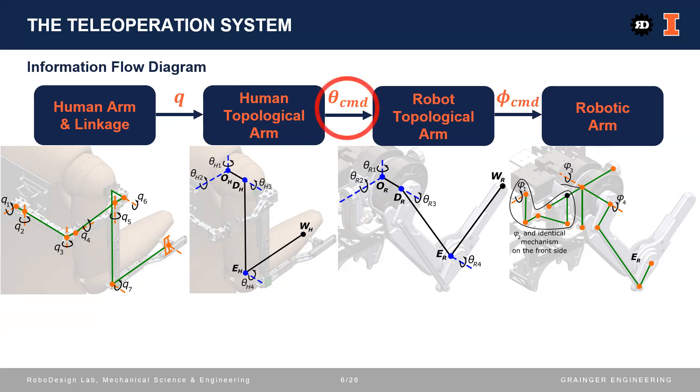The teleoperation occurs at the theta command term in between. So, joint space mapping is straightforward to implement. We simply set the commanded joint positions equal to the human topological arm's joint position.